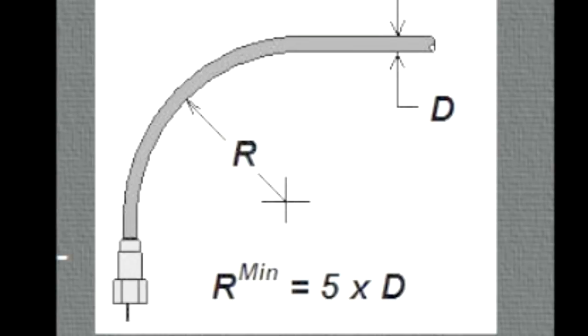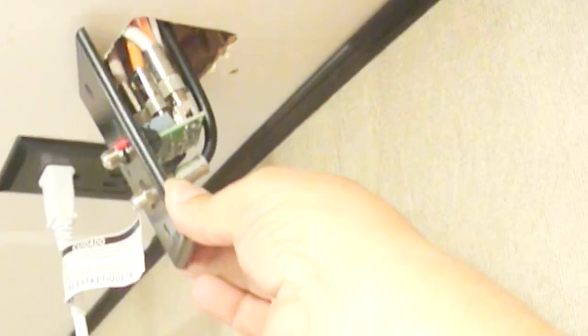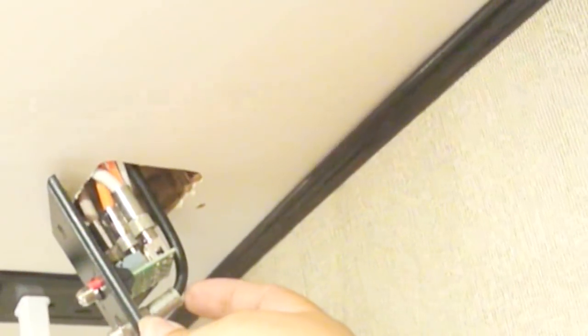Coax manufacturers typically recommend that the bend radius is no less than five times the diameter of the coax. So for a typical RG6 coax, we're looking at a radius about one and a half to one and three quarters inches or a diameter of three to three and a half inches. As you can see in the installation, that black coax is bent much sharper than that.